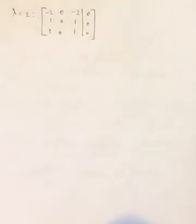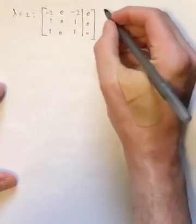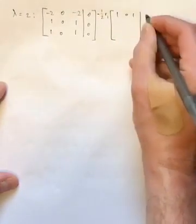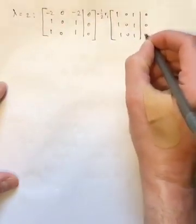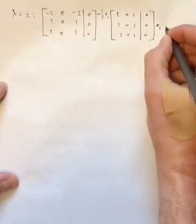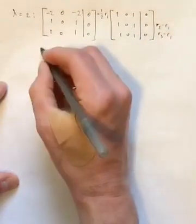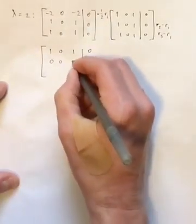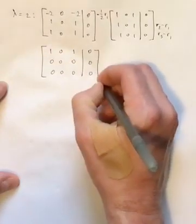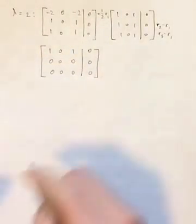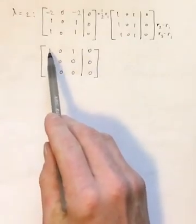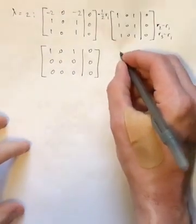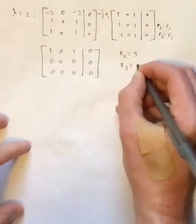You'll notice here that all three rows are constant multiples of each other. So the first thing I'm going to do is minus half of row 1, and that will get all three rows identical. And then I'll just do row 2 minus row 1, and row 3 minus row 1. So this becomes 1, 0, 1 along 0 along the top, and then it's zeros, zero rows for the second and third rows. And so you'll see here that x1 is the leading variable, which means x2 and x3 are both free. So I'll say x2 equals s and x3 equals t.